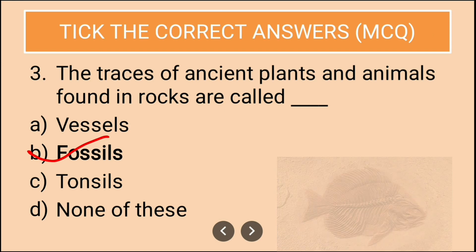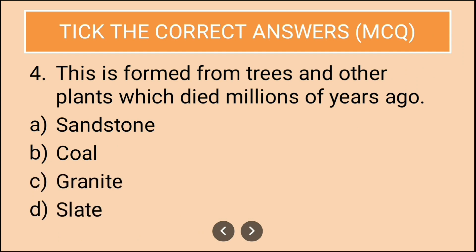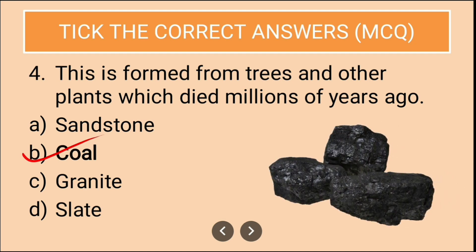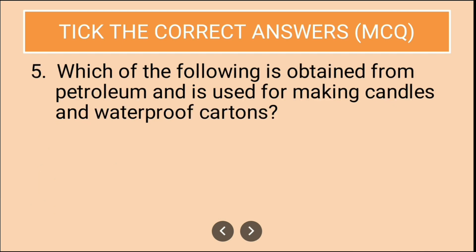Question four: This is found from trees and other plants which died millions of years ago. Options are sandstone, coal, granite, slate. The correct option is coal. Coal is formed from trees and other plants which have died millions of years ago.